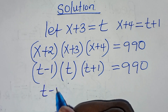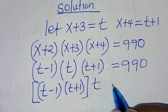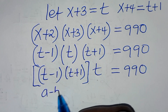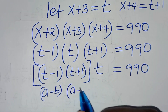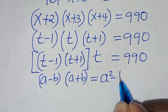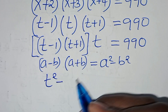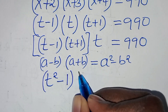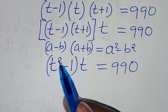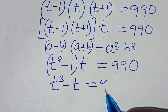Here we have (t − 1)(t + 1) multiplied by t = 990. Since t − 1 is in the form a − b and t + 1 is in the form a + b, we apply the identity (a − b)(a + b) = a² − b². So we get (t² − 1) · t = 990. Expanding, we have t³ − t = 990.